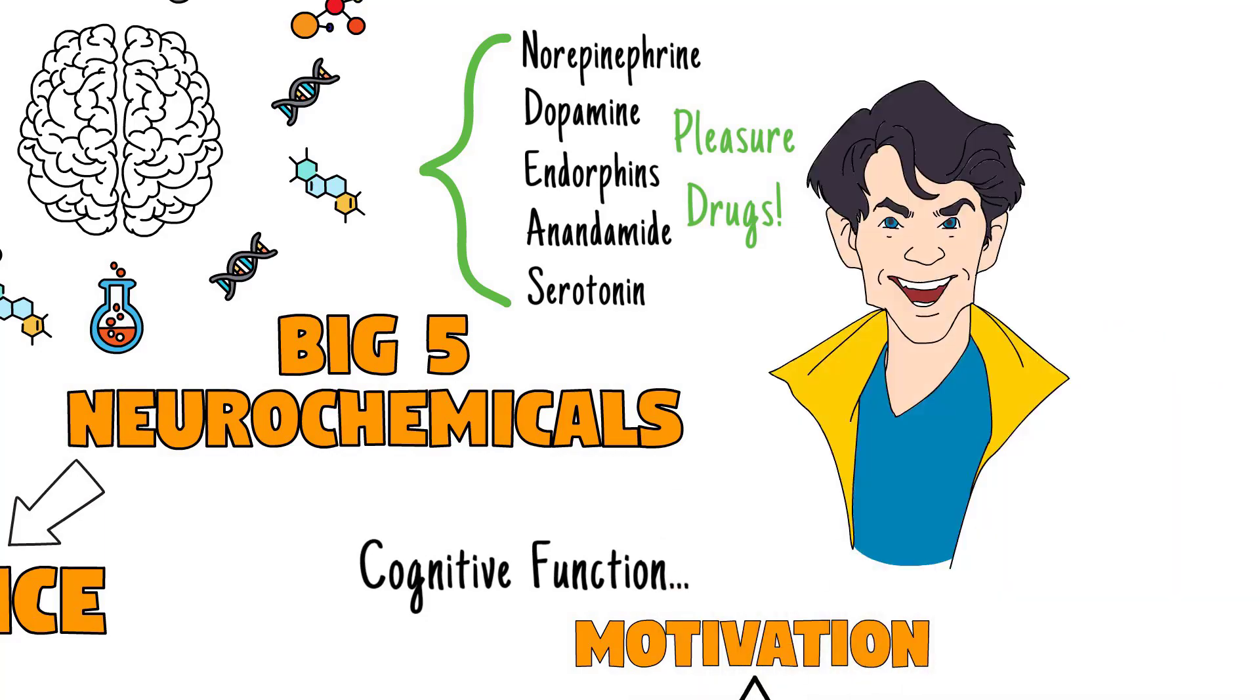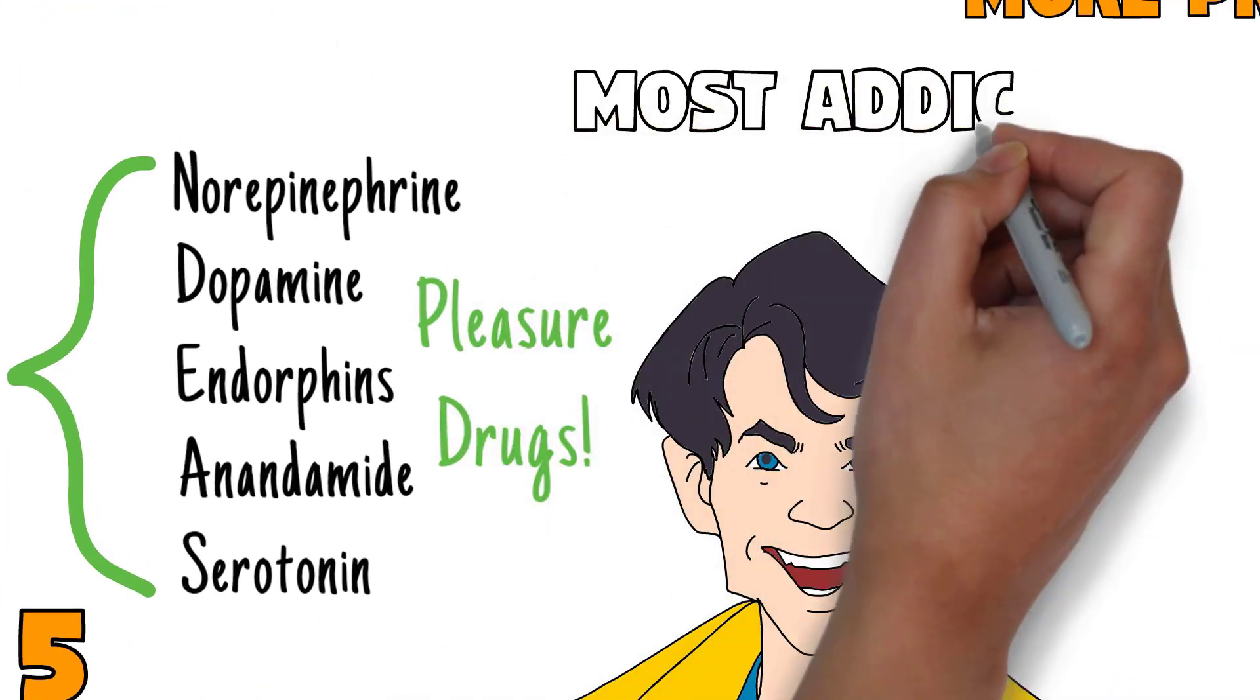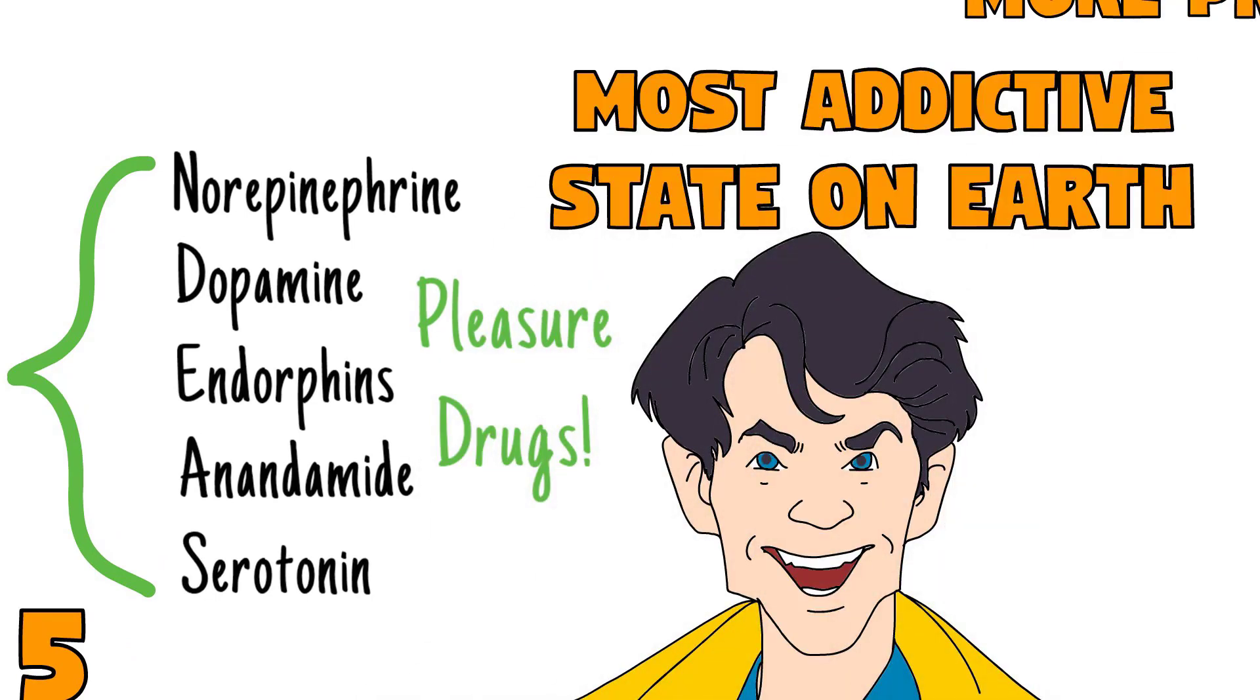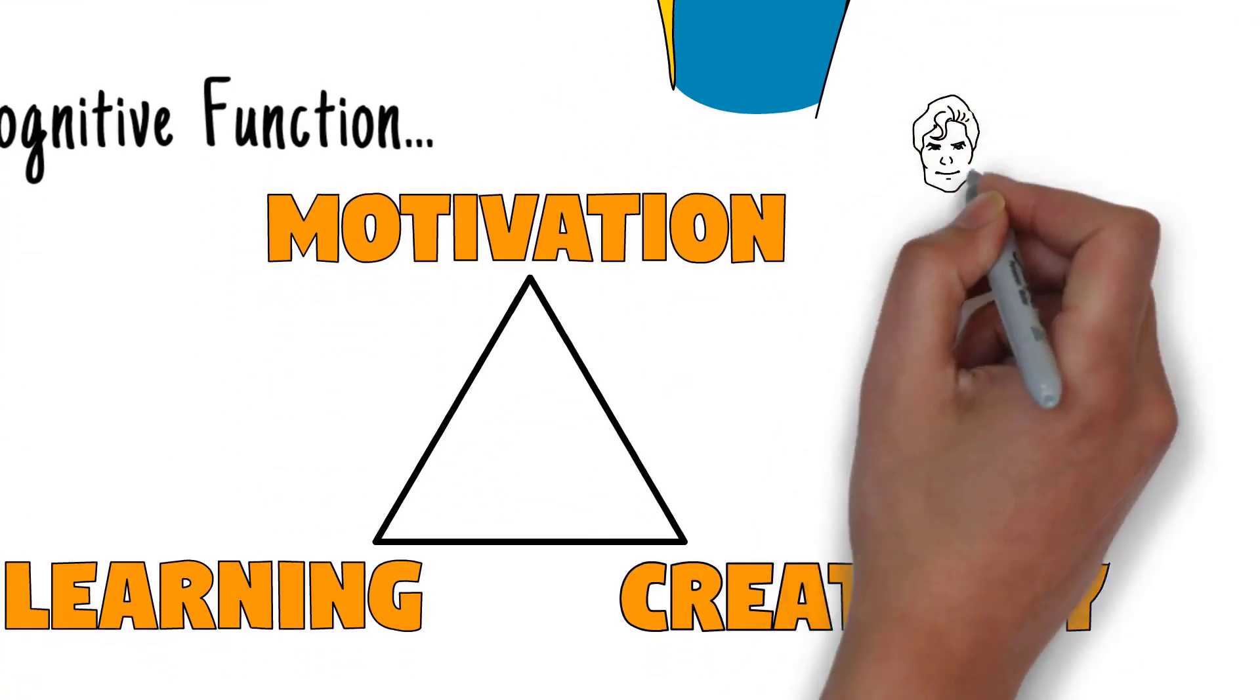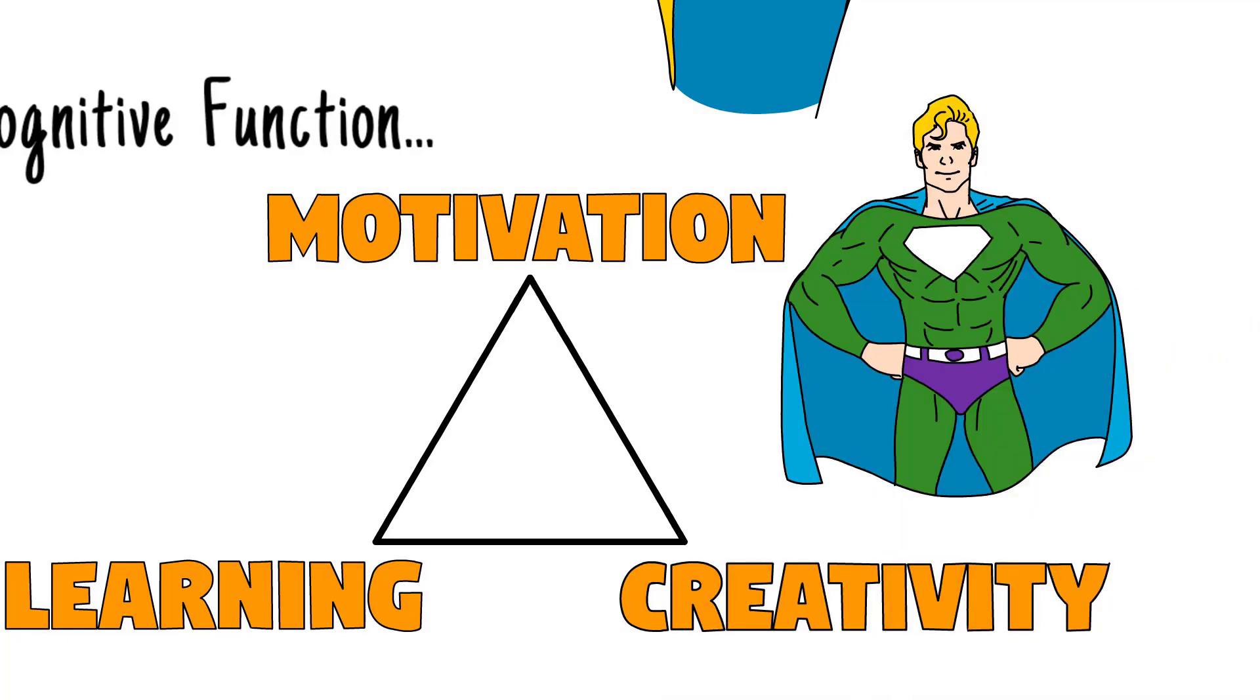I'll start with motivation. Besides being performance-enhancing chemicals, the five chemicals that show up in flow are pleasure drugs. In fact, the five most potent pleasure drugs the brain can produce. Flow is the only time it appears that we get all five at once, which is why flow is the most addictive state on earth. When you look at that McKinsey study and people are 500% more productive in flow, this massive boost in motivation is one of the main reasons why.